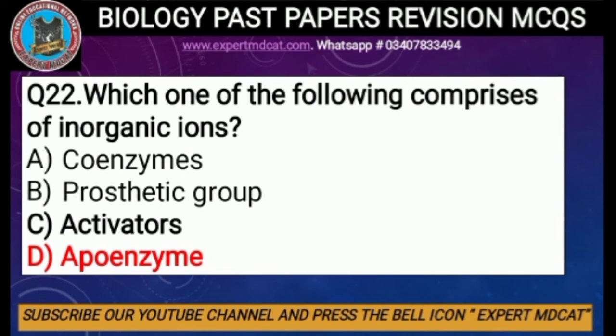Question number twenty-two: which one of the following comprises inorganic ions? The correct option is C, activator — since activators are inorganic ions that function as cofactors. Apoenzyme is not the correct answer; the correct answer is activator.